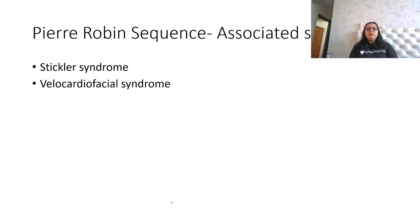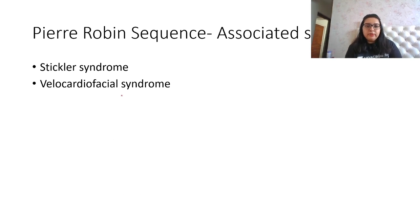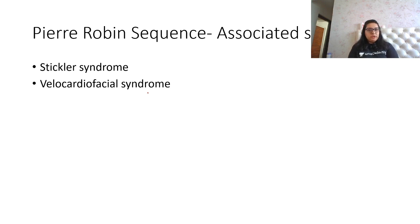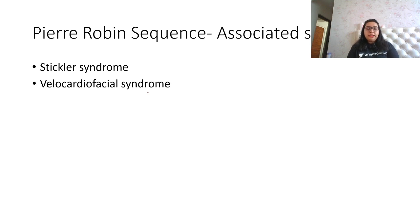Pierre Robin syndrome is also called Pierre Robin sequence because several other syndromes are associated with it. One is Stickler syndrome, and another is velocardiofacial syndrome, also called catch-22 syndrome or DiGeorge syndrome. The velocardiofacial syndrome was already discussed in detail in yesterday's session, so please refer back to that.